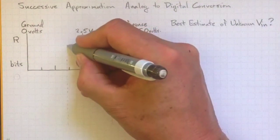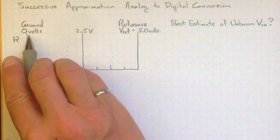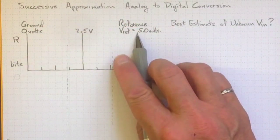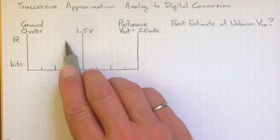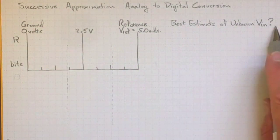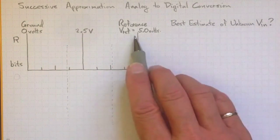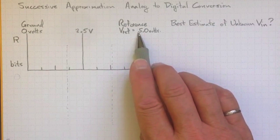Suppose we had an input voltage at this level here, somewhere between zero and our reference voltage of 5 volts. So this looks like it's somewhere around 2 volts, but we don't know what that voltage is yet. We could figure out what that voltage is by comparing it to the reference voltage.